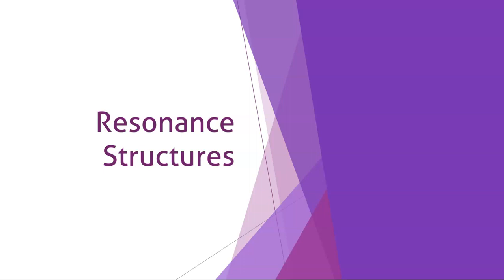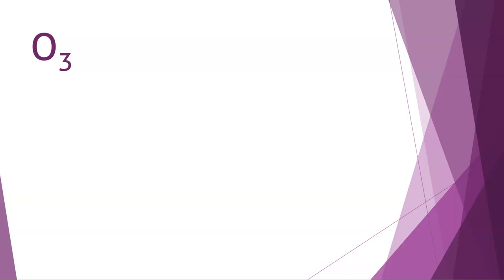It's really easier to understand if you just see it by drawing some Lewis structures. The first molecule we'll talk about is ozone. Ozone has three oxygen atoms, all arranged in pretty much a line. Ozone has 18 available electrons — each oxygen brings six. If I go ahead and put lone pairs around each oxygen so that everybody has eight, that uses 20 electrons, which is two more than we have. That means we've got to put a double bond in somewhere.